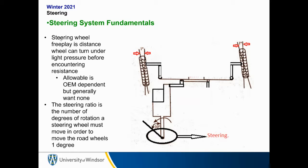Another important factor is the steering ratio: the number of degrees of rotation a steering wheel must move in order to move the road wheels one degree. For example, turning the steering wheel 30 degrees while the wheel rotates only about one degree is a 30-to-1 steering ratio. We have steering ratios because we need a mechanical advantage to turn the wheels — a 1-to-1 ratio would require far too much force. By increasing the steering ratio, we turn the wheel further but with much less force required.